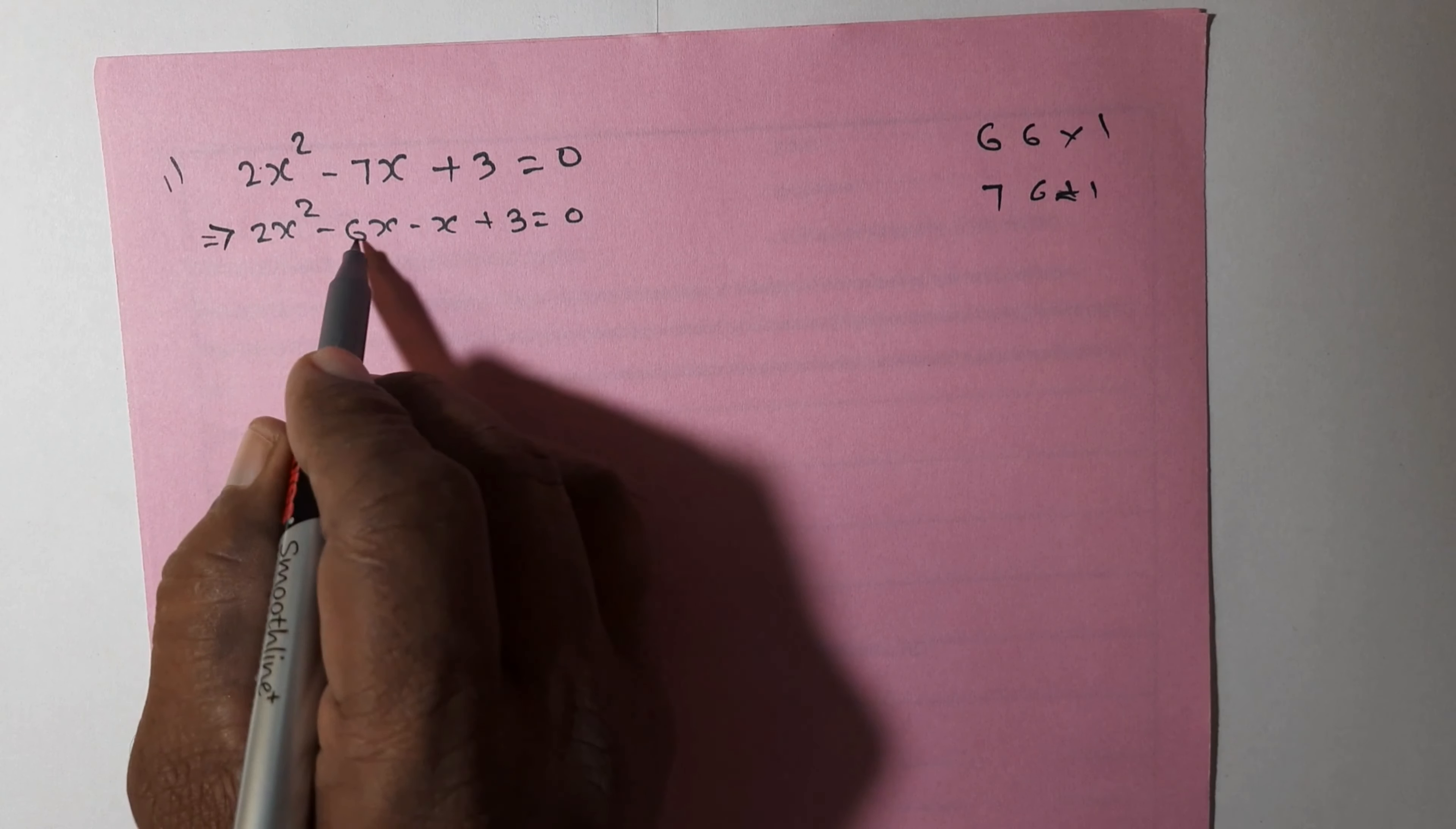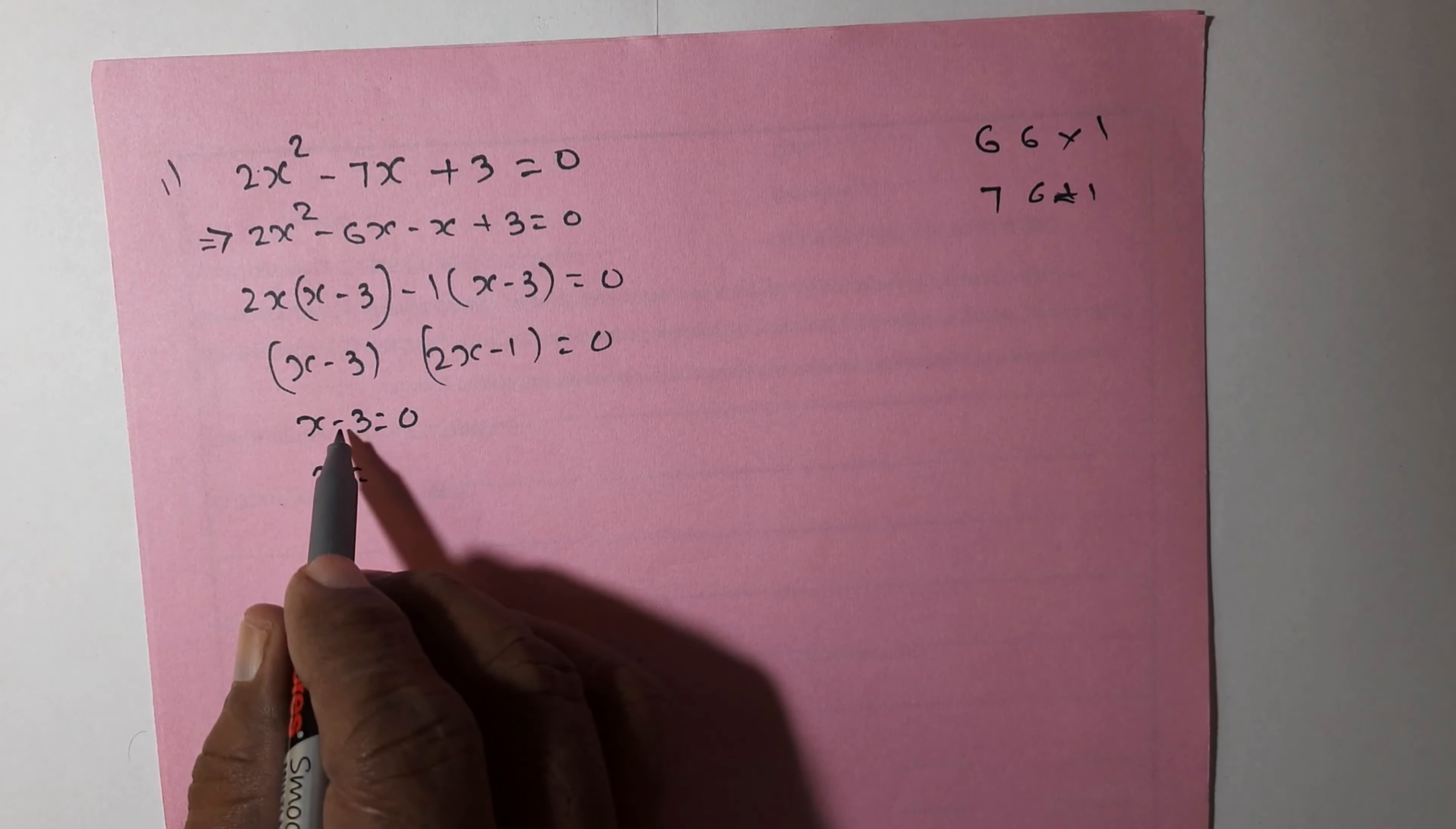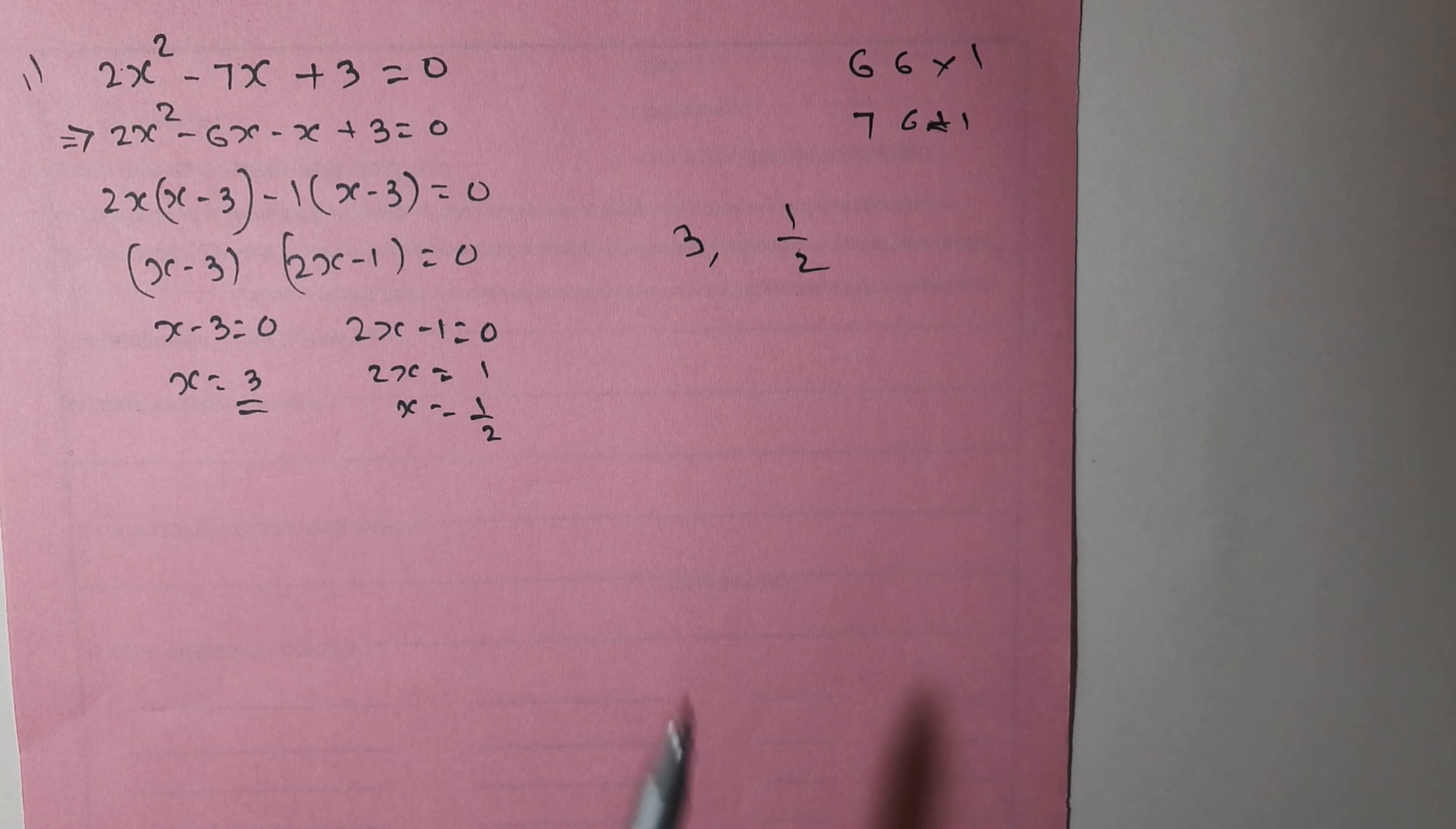How? First you multiply 2 × 3, which is 6. So we need two numbers which multiply to get 6 and add or subtract to get 7. So we have 6 × 1 and 6 + 1. So instead of 7 you give 6 and 1. This is 2x² - 6x - x + 3 = 0. What is common in both? Common is 2x. So 2x(x - 3). Now here, 1(x - 3). We got (x - 3) and (2x - 1) both equals to 0. If x - 3 = 0, then x = 3. If 2x - 1 = 0, then 2x = 1, so x = 1/2. So we got two roots: one is 3, another is 1/2. This is one method.